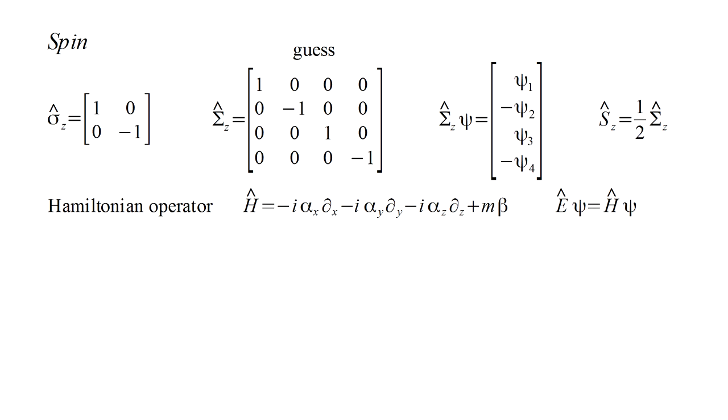Dirac's equation has the form e hat psi equals h hat psi, where e hat is the energy operator and h hat is called the Hamiltonian operator. It expresses energy explicitly in terms of dynamical quantities such as momentum. Now consider the Lz hat operator, corresponding to the z component of orbital angular momentum. We can show that h hat and Lz hat do not commute. The same is true for the x and y components of orbital angular momentum. This means that, unlike the Schrodinger equation, the Dirac equation does not allow a state of definite energy to have a state of definite orbital angular momentum. Put another way, in the Dirac equation, orbital angular momentum is not conserved for a closed system.